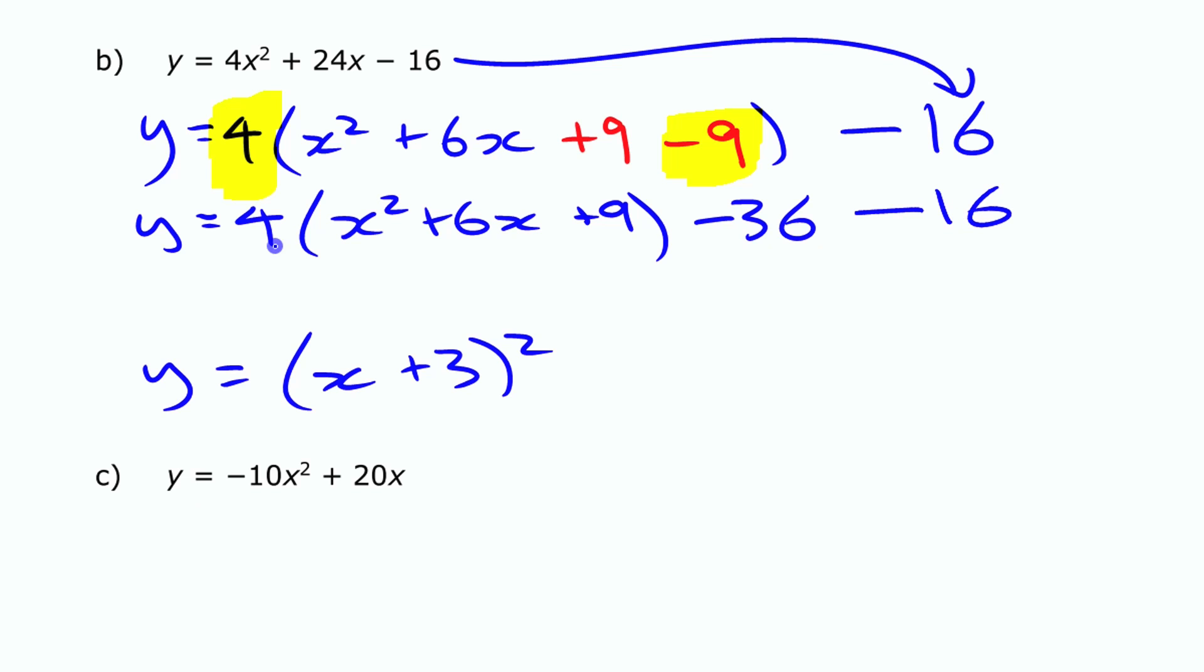Then I can turn this into this. I can keep this 4 out in front, and then I can group these two things together, so we've got minus 52. Again, this is equivalent to that standard form function that we started with. You could check it, verify it. I'll leave you to do that yourself.